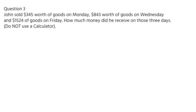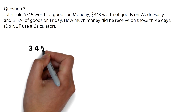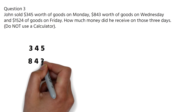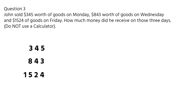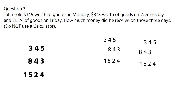The work involved in adding whole numbers is to align the numbers from the unit column, or the right, and add them starting from the unit column, carrying values to the next column if you have two-digit values. So here we have 345, then 843, and then 1,524. Please make sure they are aligned starting from the unit column — that's the right. It cannot look like any of these; all three numbers must align at the right.